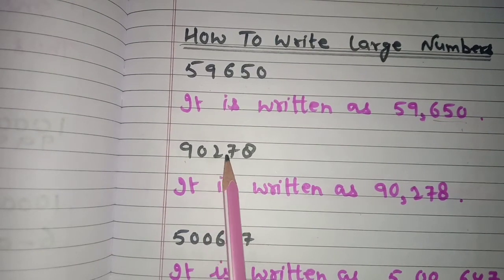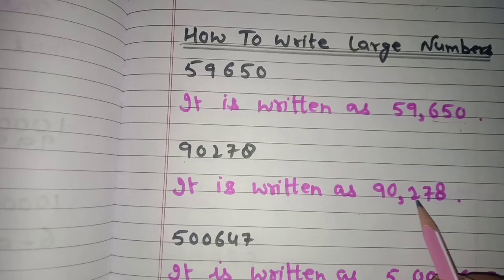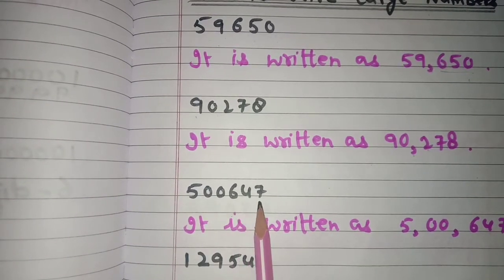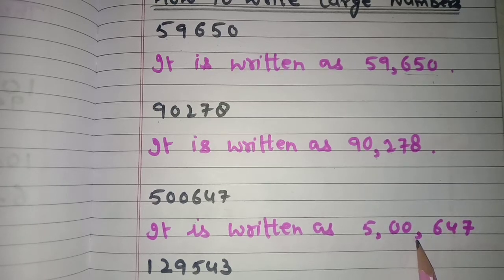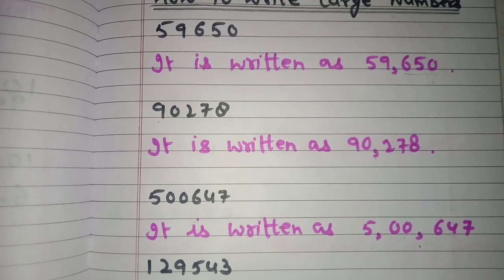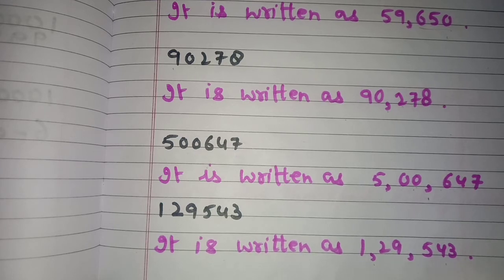One more example: 90,278 — again from the right side, before three digits, that is before the hundreds place, put one comma. For a six digit number like 5,00,647 — from the right side before three digits put one comma, and then before the next two digits put another comma. Similarly for 11,29,543 — from the right put one comma before three digits, then another comma before two more digits. This is how you write large numbers using commas.